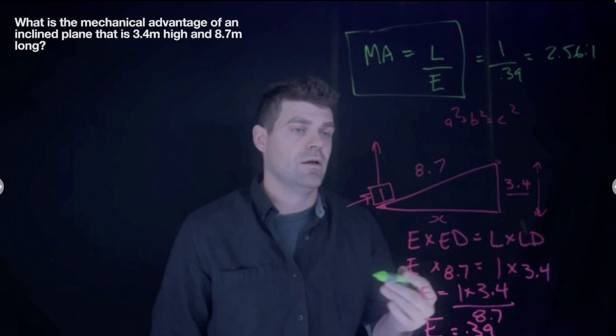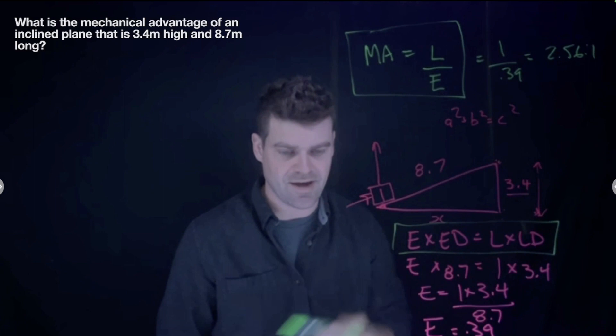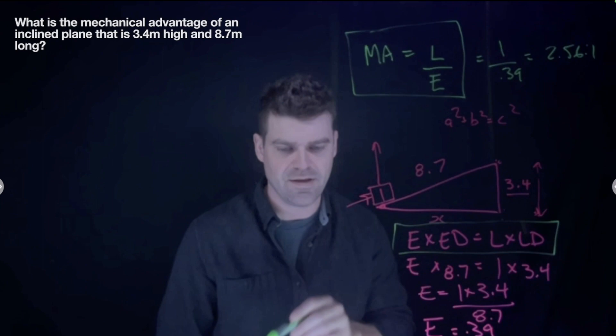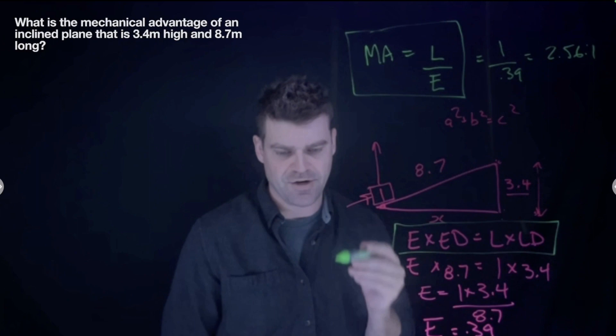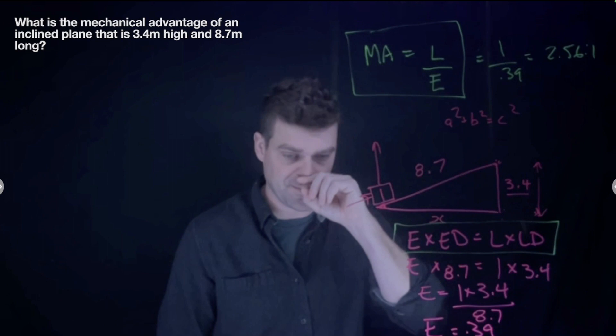To summarize: Mechanical Advantage = Load ÷ Effort. Effort × Effort Distance = Load × Load Distance. If you have those two formulas in your head and understand where effort and load travel, you can get through any of these questions. For pulleys specifically: draw a picture and count how many ropes are supporting the load — that is your mechanical advantage, which you can also plug into the formula to calculate the required effort.